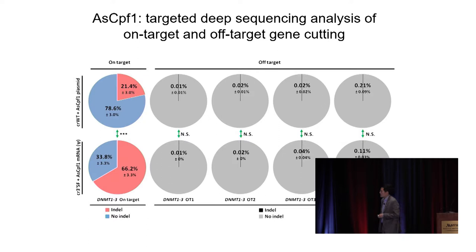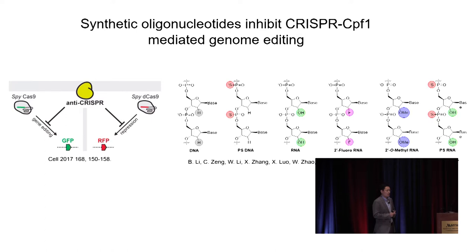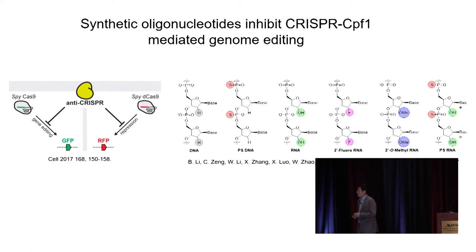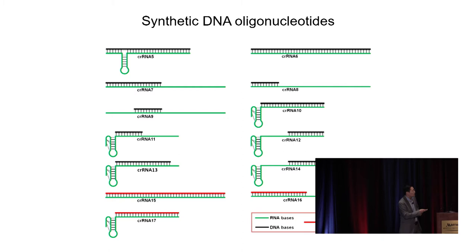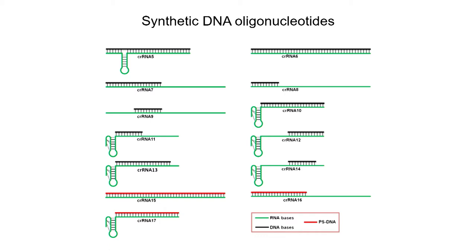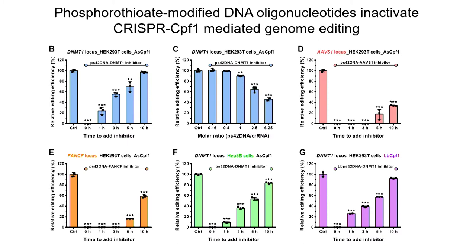While engineering CRISPR-CPF1, we noticed reports of anti-CRISPR proteins that are potent inhibitors of Cas9 endonuclease. This led us to explore whether synthetic oligonucleotides could inhibit CPF1 activity. We incorporated various chemically modified nucleotides into synthetic DNA and RNA oligonucleotides and tested their inhibition activity. We identified that phosphorothioate (PS)-modified DNA is a potent CPF1 inhibitor, showing both time-dependent and dose-dependent inhibition.